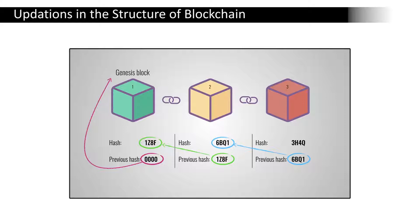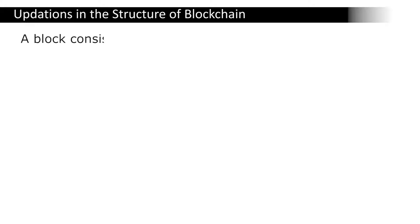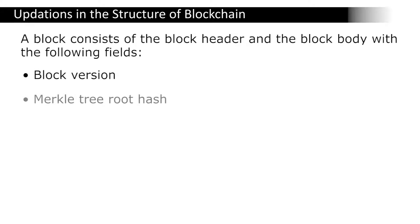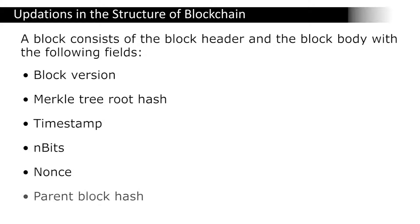The block has two parts: the header and the body. The fields include block version, Merkle tree root hash, timestamp, nBits, nonce, and parent block hash. These are the components or fields of the blockchain block structure.